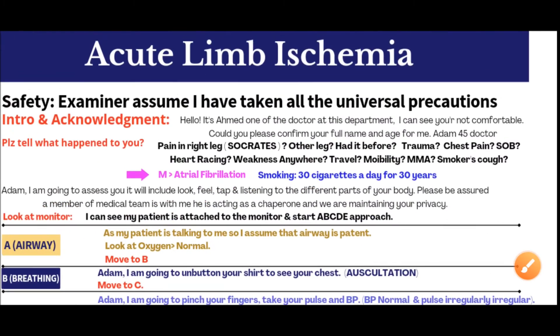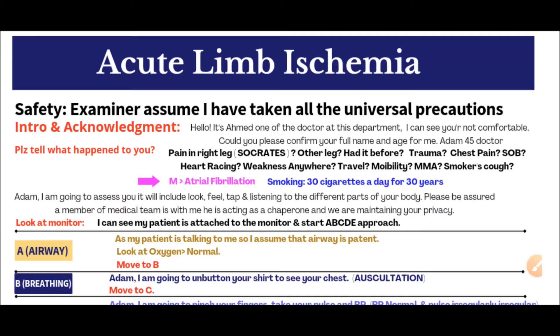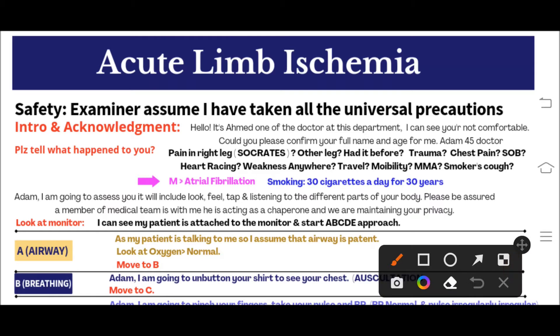Let's move to the screen. When you enter the room, first of all you have to introduce yourself to the examiner. You will say: 'Hello, I am Dr. Ahmad, my GMC number is 780-88-12345' - whatever your GMC number is, loudly verbalize it to the examiner. After this, make sure you are a safe doctor and maintaining privacy. Loudly say: 'Examiner, assume I have taken all universal precautions.'